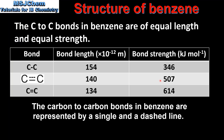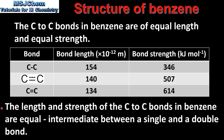Looking at bond strength, the carbon to carbon bonds in benzene are all the same strength — stronger than carbon to carbon single bonds but weaker than carbon to carbon double bonds. To summarize, the length and strength of the carbon to carbon bonds in benzene are equal and intermediate between a single and a double bond.